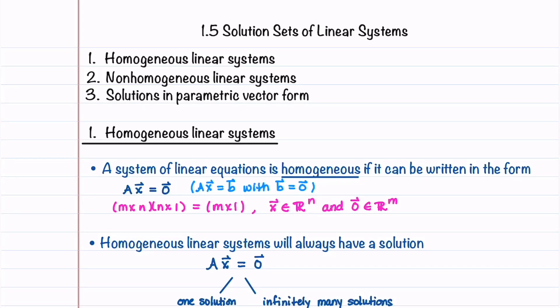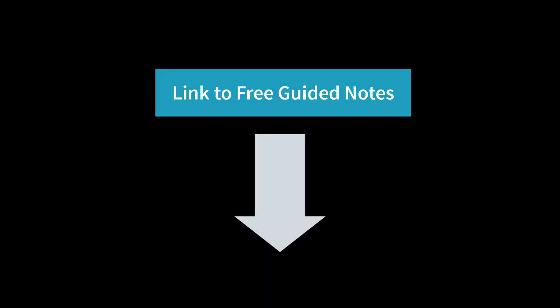Welcome to Understand the Math. This video is part of a series of videos on linear algebra and its applications, and covers section 1.5 on solution sets of linear systems. We'll learn all about homogeneous and non-homogeneous linear systems and how to write their solutions in parametric vector form. Be sure to check out the link below for free guided notes that you can highlight and fill in as you watch this video.